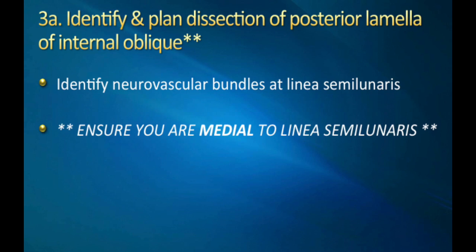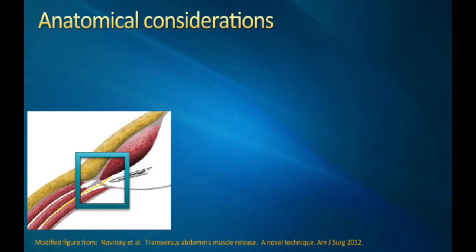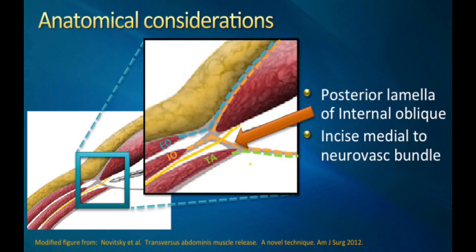At this point, I can't emphasize enough that it is crucial to identify the neurovascular bundles at the linea semilunaris, because this is an important anatomic landmark for your TAR dissection — to really ensure that you are medial to the linea semilunaris. If we focus on the edge of the rectus muscle at the tri-muscular complex where the obliques and the transversus abdominis meet up at the linea semilunaris, the neurovascular bundles come out between the internal oblique and the transversus abdominis. When you incise the posterior lamella, you leave the neurovascular bundles in place without disruption.